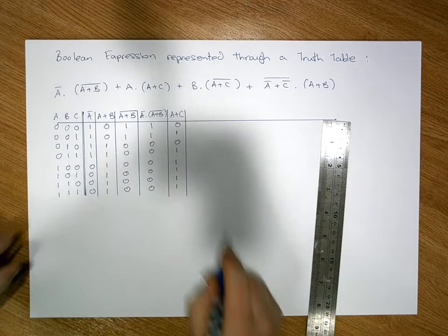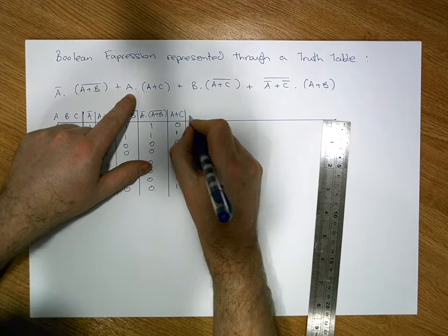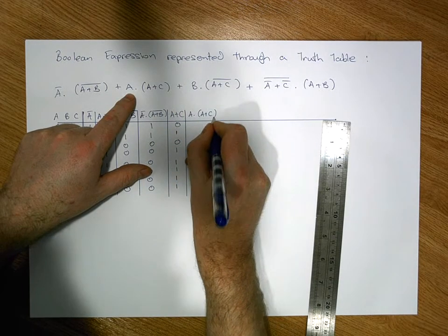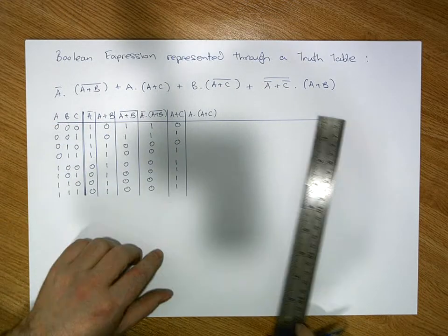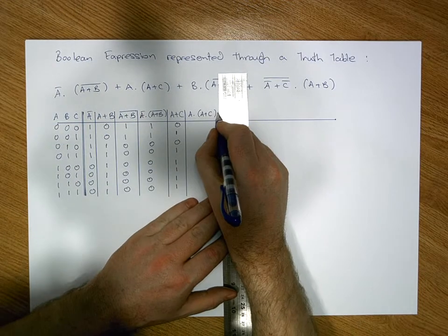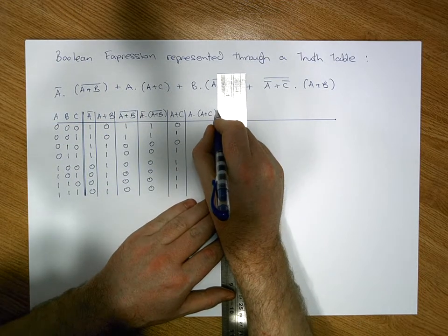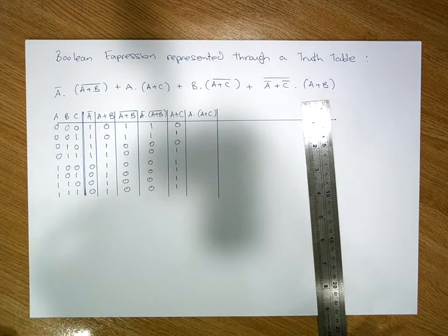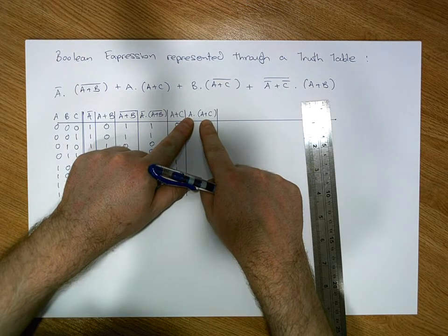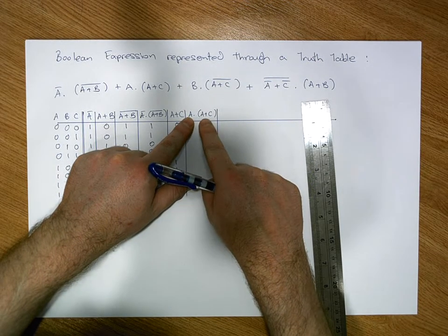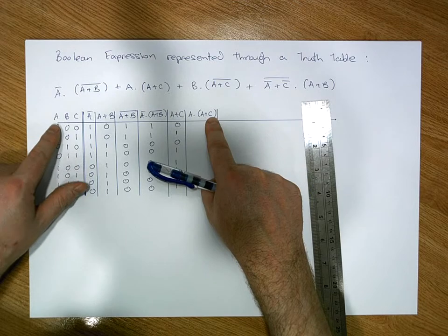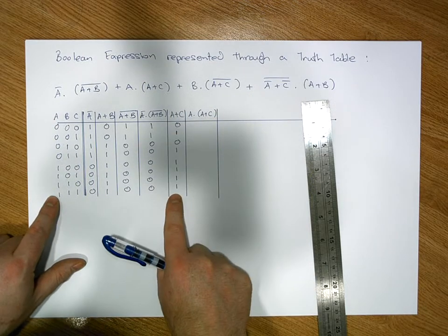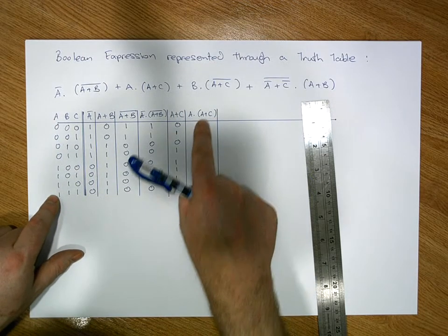Now we can calculate A ANDed with (A OR C) to give us the second term. We look at the A column and the A OR C column and AND them together — an AND only ever gives a one when both are simultaneously one. The A column has ones only in the last four rows, and those match with the A OR C column, so the last four values are one and everything else is zero.